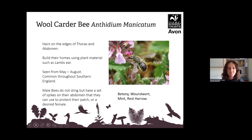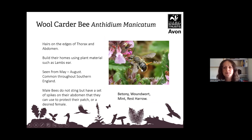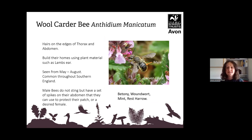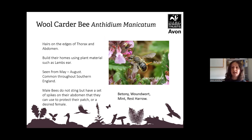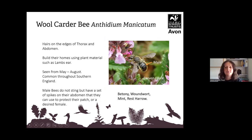The wool carder bee is the only solitary carder bee. They have hairs on the edges of the thorax and abdomen, and little yellow spots on either side. They build their homes using plant materials such as lamb's ear — they'll pick the hairs off and line their nest with them. They are seen from May to August and are common throughout southern England. Male bees don't sting but have a set of spikes on their abdomen to protect the female they're mating with and their patch. They feed on betony, woundwort, mint and rest harrow.